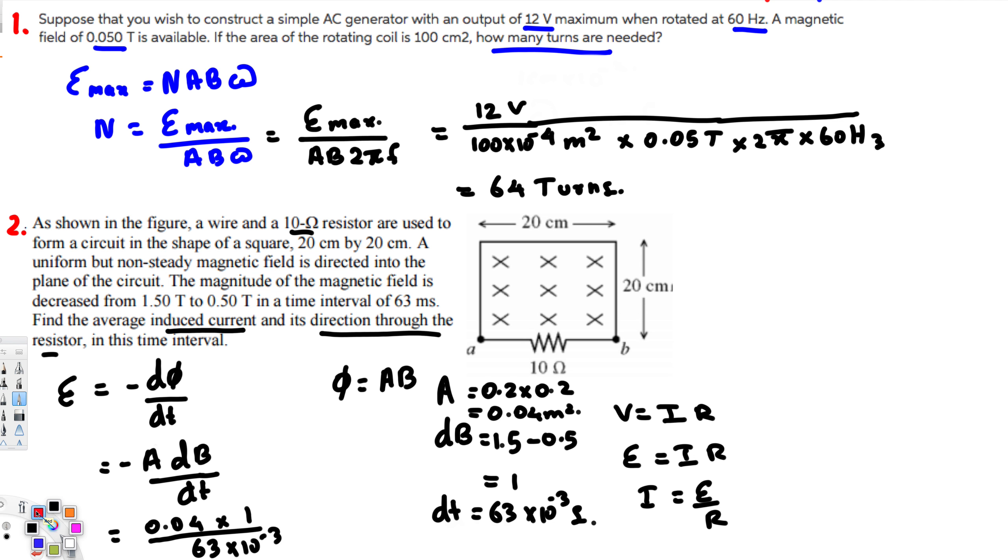Now we have the EMF. Now we can go ahead and plug it in this equation to find the current. EMF is 0.635 volts and resistance is 10 ohms, and that's going to give you 0.0635 amperes, which is equivalent to 63.5 milliamperes.